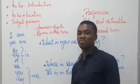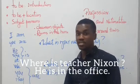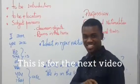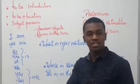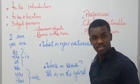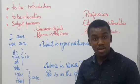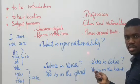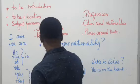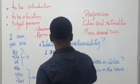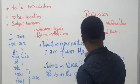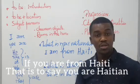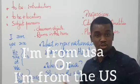We'll learn what he is doing in the next video. For now, another example: Where is the teacher? He is at the airport. At the airport, I meet Mr. Ruby and I ask: Where are you from? Or: What is your nationality? You answer using 'to be': I am from Haiti. If you are from Haiti, you are Haitian. I am from America — the United States of America — so I am American.